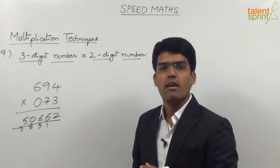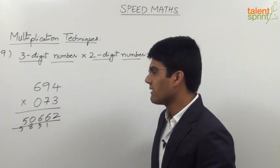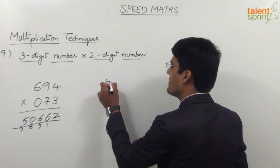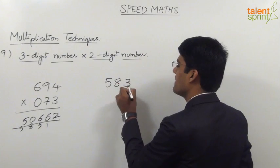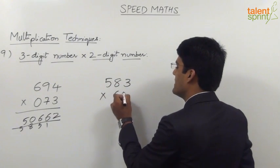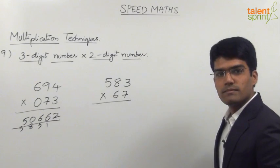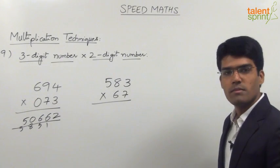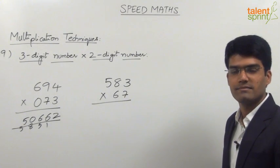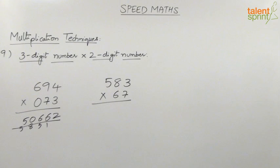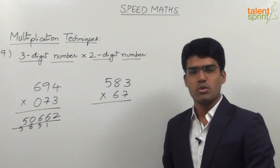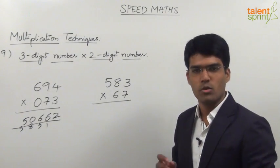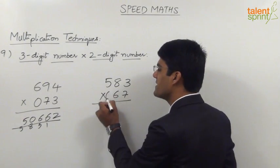Let us now take one more example using the same technique. We have to multiply 583 with 67. Try to multiply these two numbers and get the required answer. Going by the same concept, we place a 0 in front of 67.